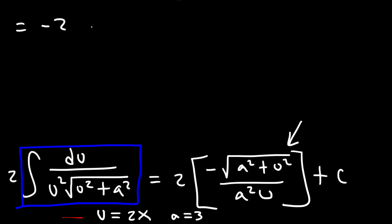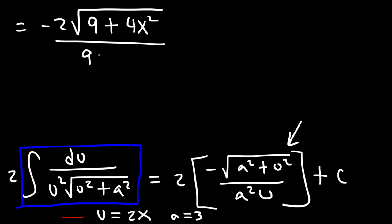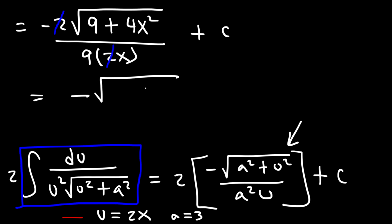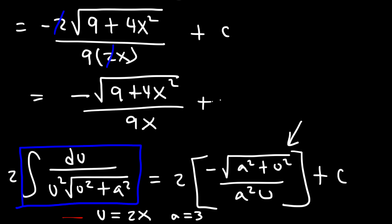All we need to do now is plug in u and a. It's going to be negative 2 times the square root of a squared — which is 9 — plus u squared — which is 4x squared — divided by a squared times u. We can cancel a 2, so the final answer is negative square root of 9 plus 4x squared, divided by 9x, plus c.